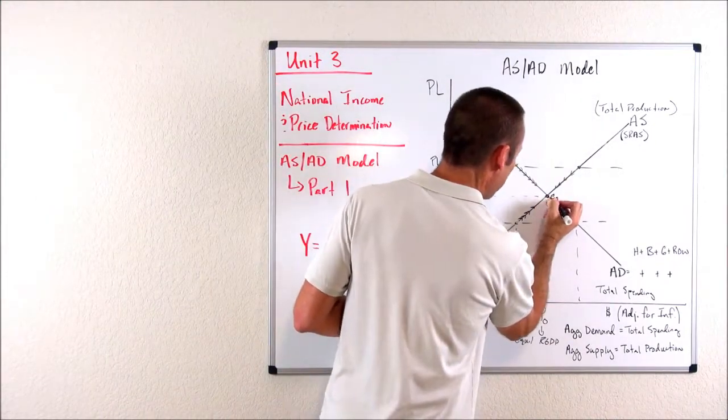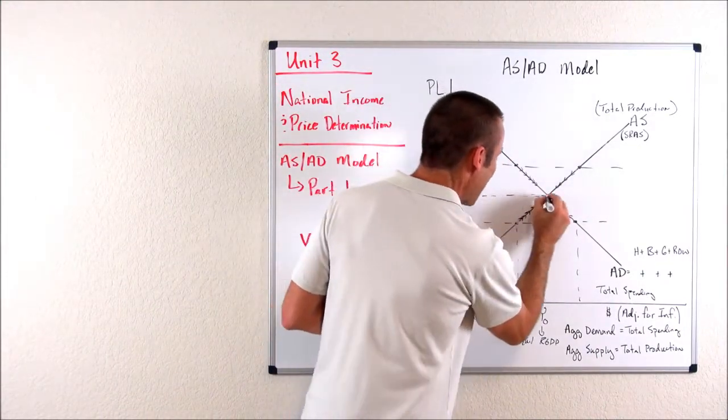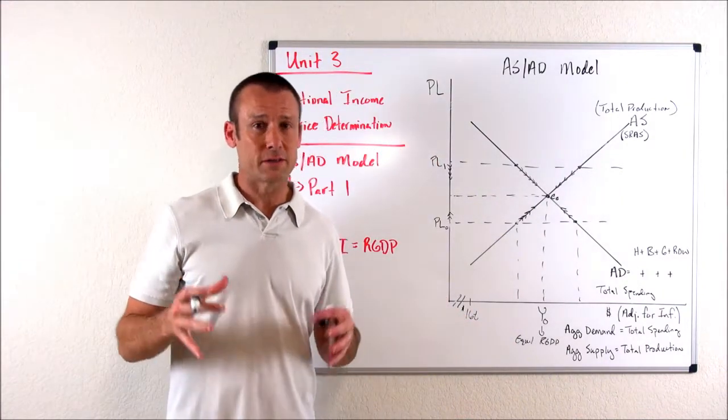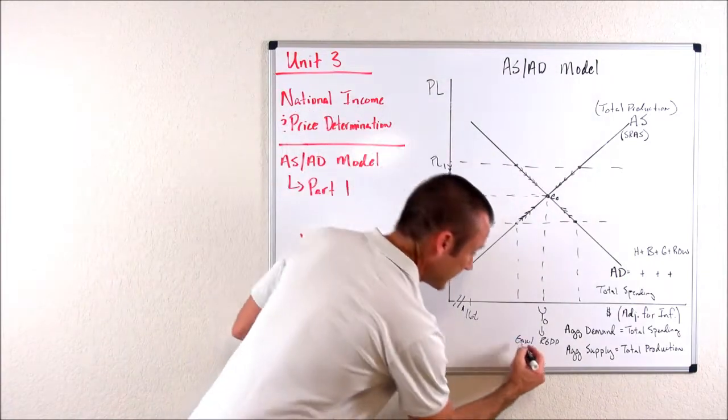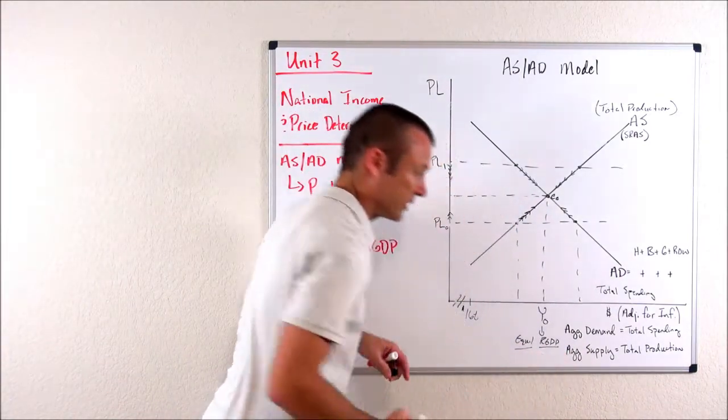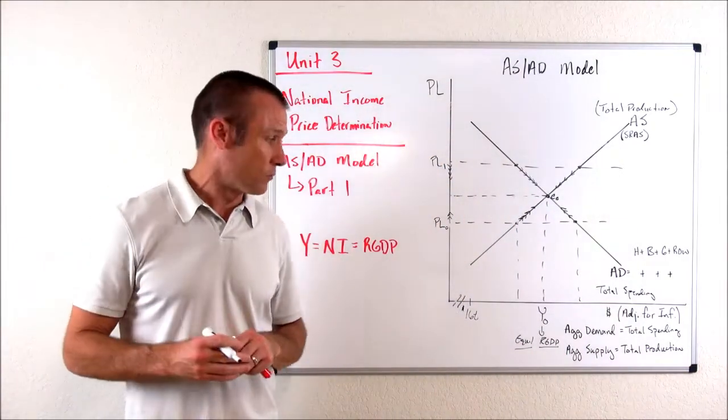So what's happening at that equilibrium? At the equilibrium, total spending is equaling total production, and that is what we call our equilibrium real GDP. That is our equilibrium real GDP.